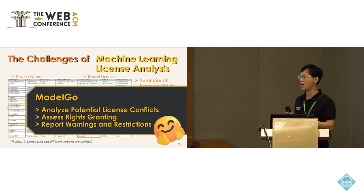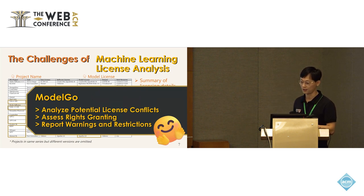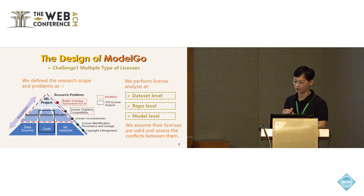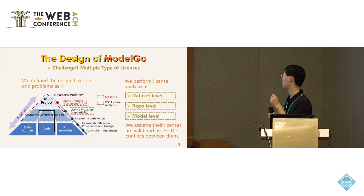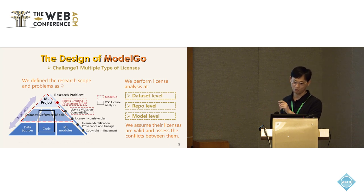That is why we developed ModelGoals. Our tool can offer three functions: analyze potential license conflicts, assess license grantings, and report warnings and restrictions. Our research scope covers license analysis at the dataset level, repository level, and model level.